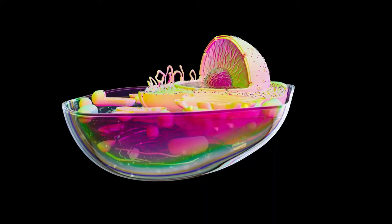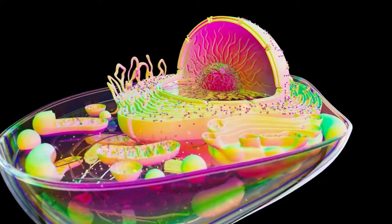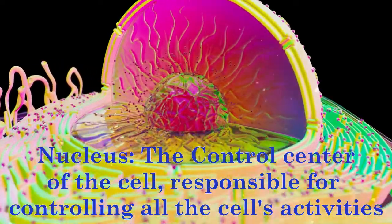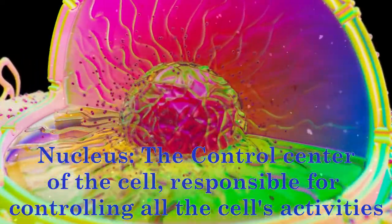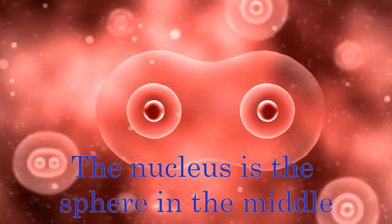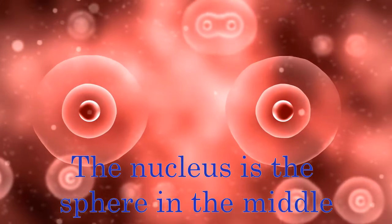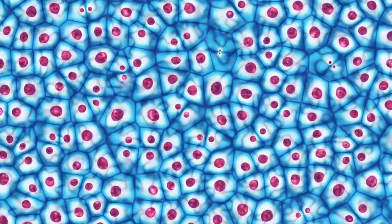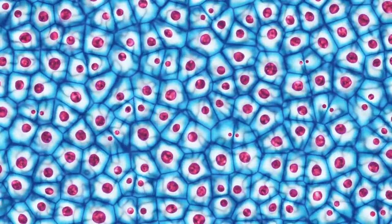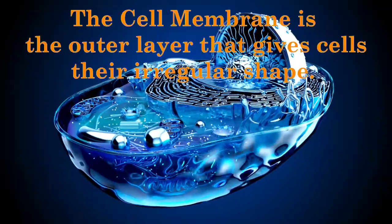Let's begin with the most crucial organelle of a cell: the nucleus. The nucleus is regarded as the cell's brain because it acts as the control center, regulating almost all of the cell's functions. It oversees functions such as water regulation, protein synthesis, DNA production, and waste removal. The nucleus is one of the most recognizable components of the cell and is easily visible under a microscope.